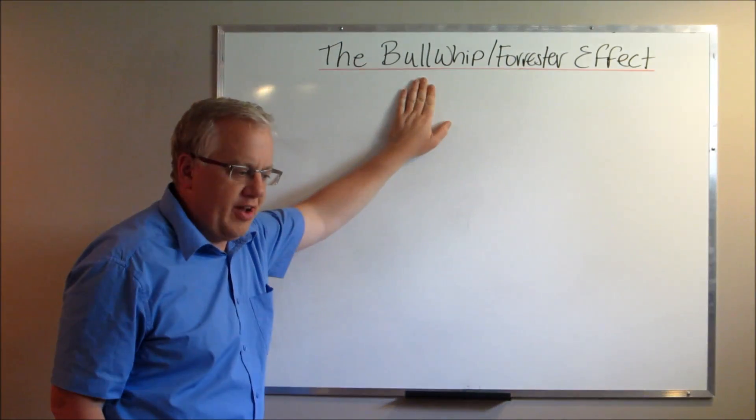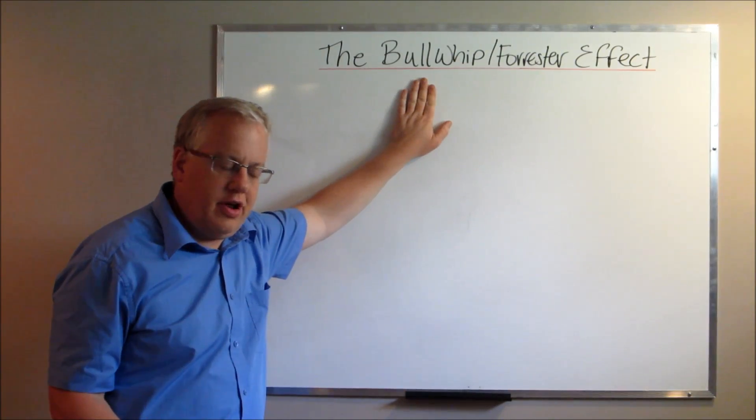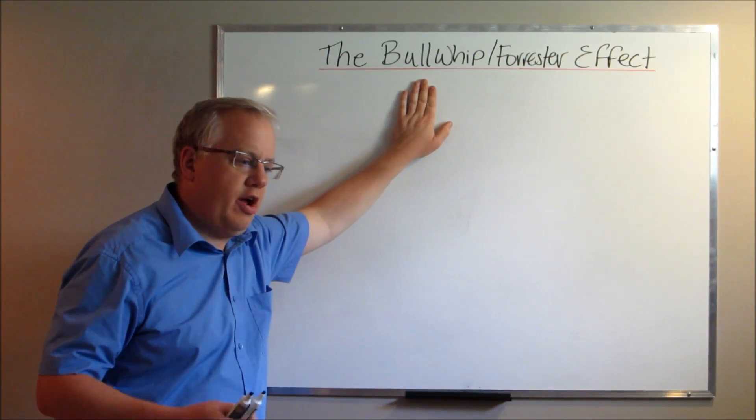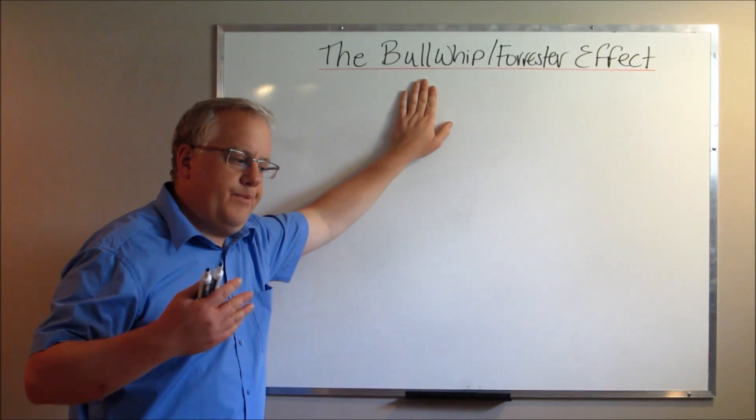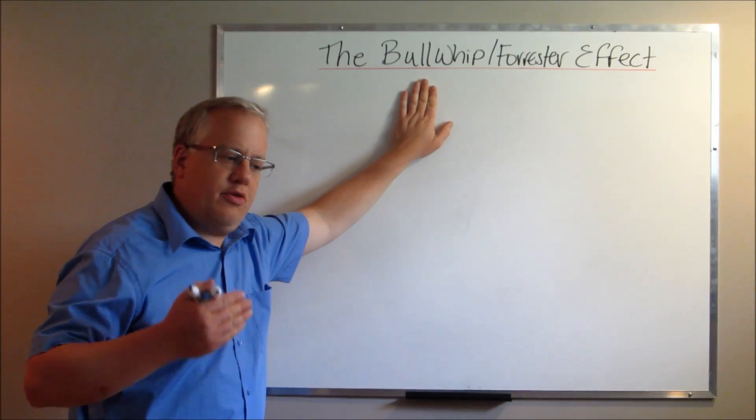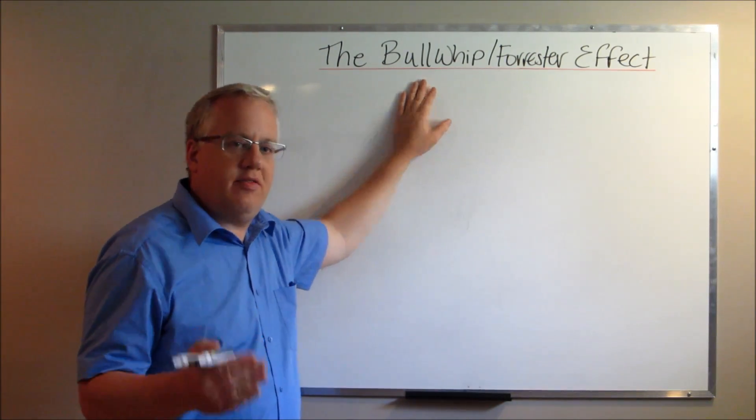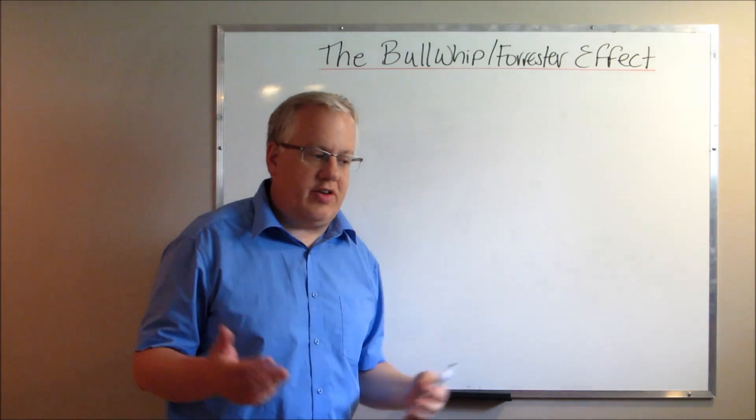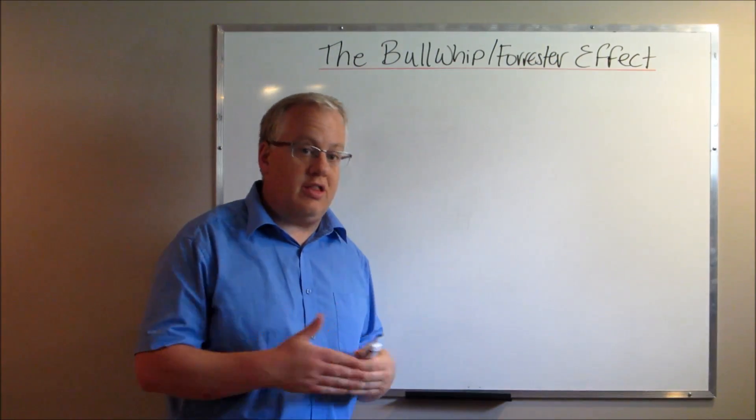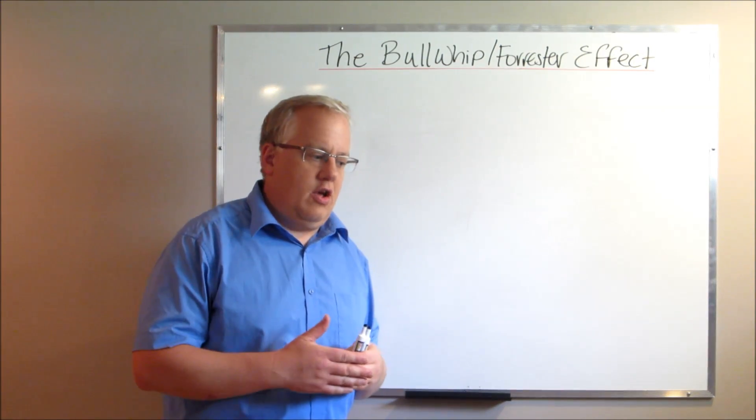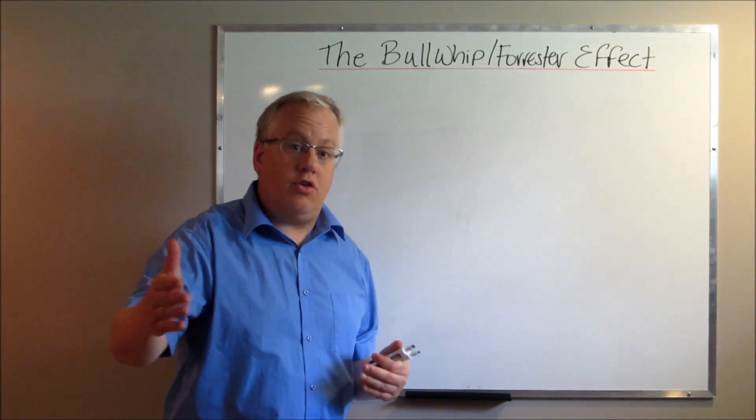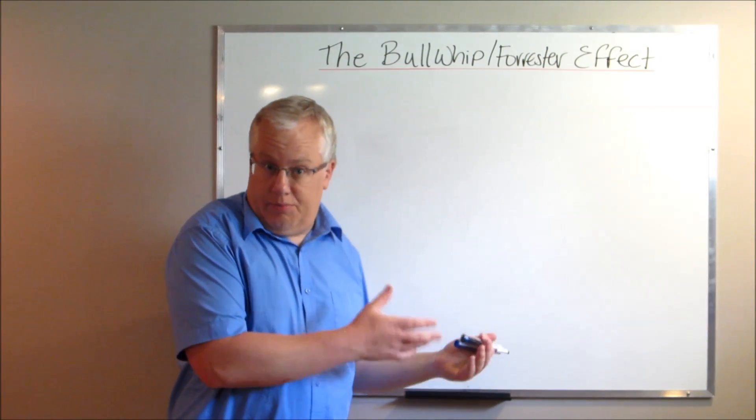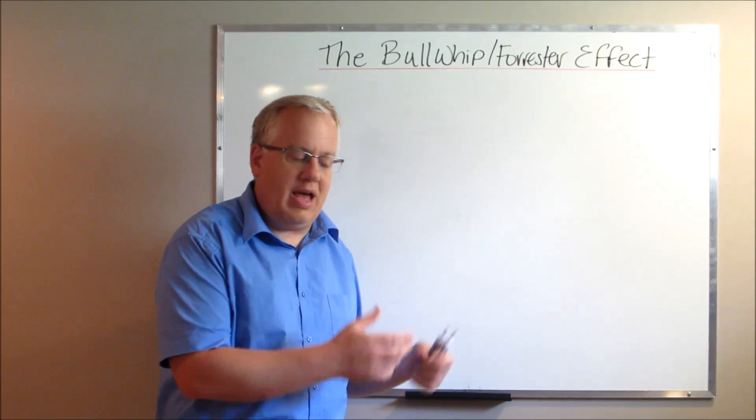It's called the Forrester effect because it originated from Jay Forrester who wrote a book in 1961 called Industrial Dynamics. He was basically trying to explain and did a very good job to account for the unforeseen spikes in demand within a supply chain and why these unforeseen spikes have a reverberating effect throughout the entire supply chain to the extent where every member of the supply chain ramps up their inventory counts to account for the demand that they've suddenly come face-to-face with, this sudden increase in demand.